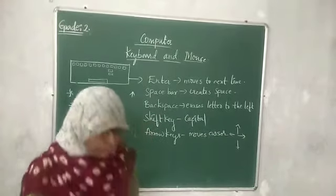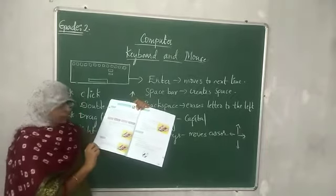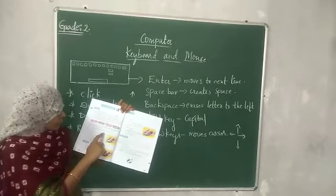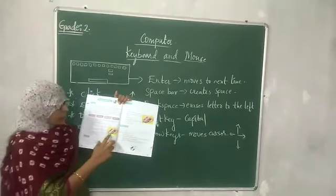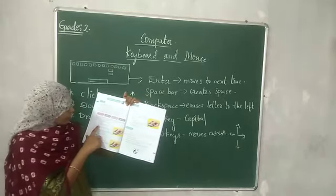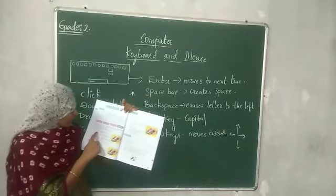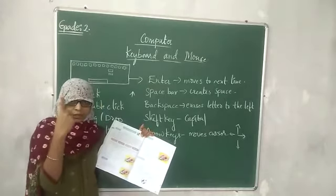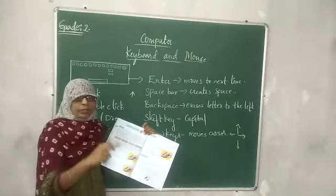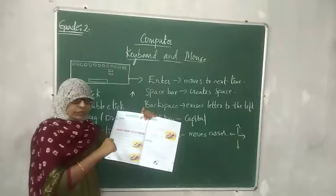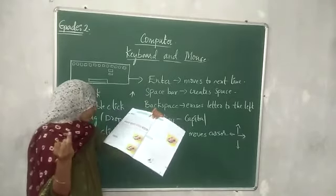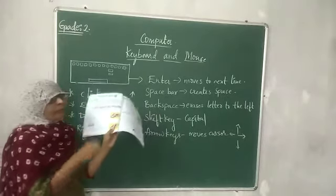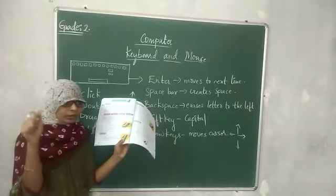You can open your textbook and look at this picture. Turn to page number 24 of your textbook. The index finger should be placed on the left mouse button, the middle finger on the right button. The thumb goes on the left side, and the ring finger on the right side of the mouse. Your arm will rest on top of the mouse.